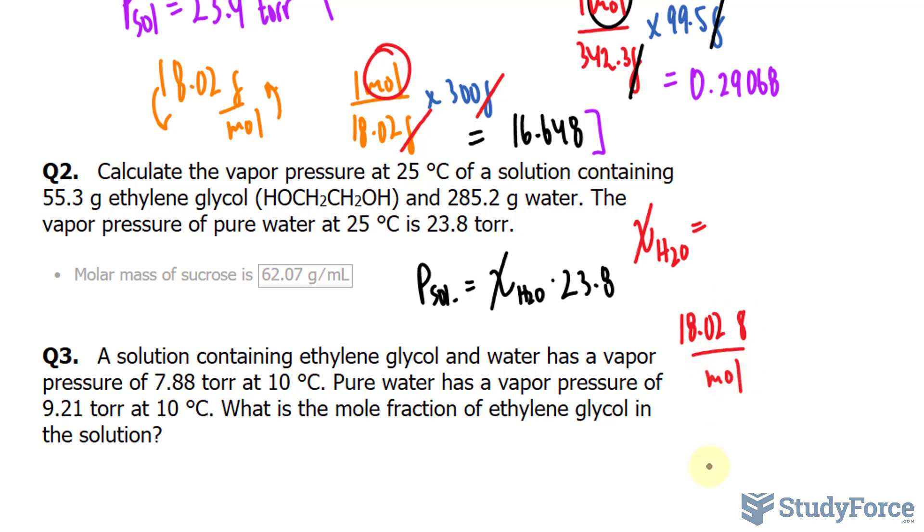And that can easily be found using your periodic table by finding the individual molar masses of the atoms contained in water. And I'll multiply this by the mass of water, which is given in the question.